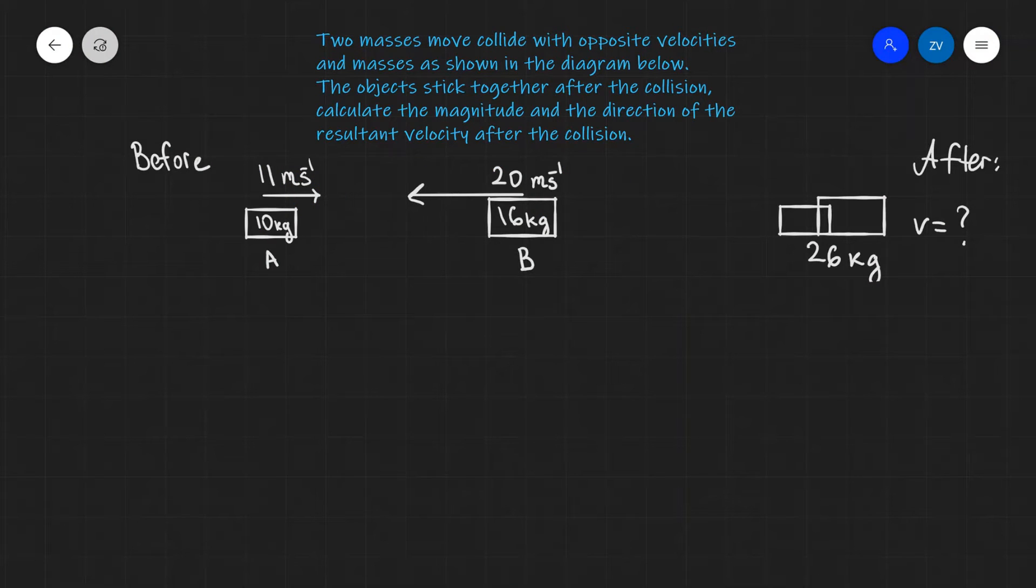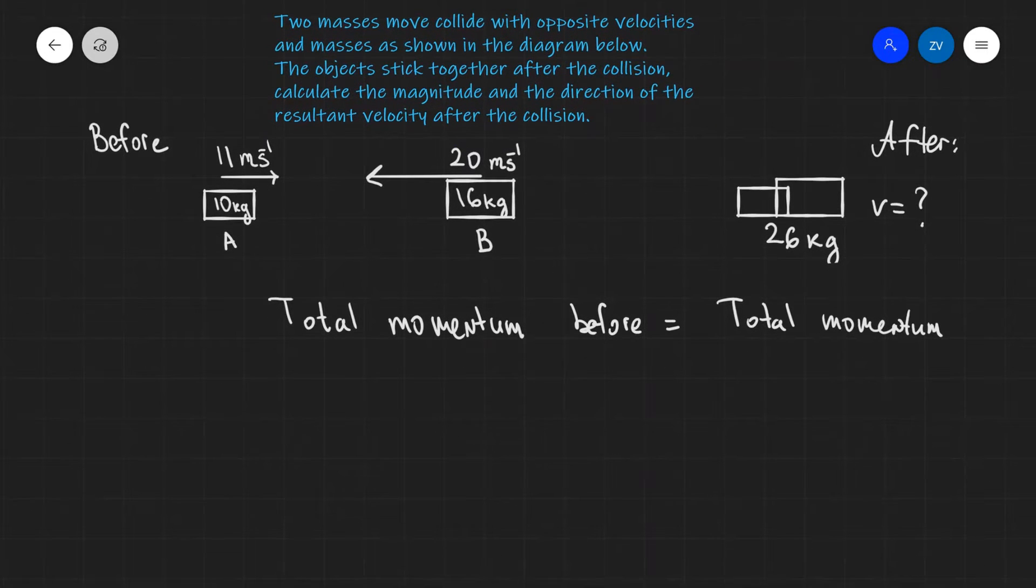In order to solve this we will need to use the principle of conservation of linear momentum, which says that the total momentum in any given system remains unchanged unless there is an external force acting on it. In practice, this means that our total momentum before the collision will be equal to our total momentum after the collision.